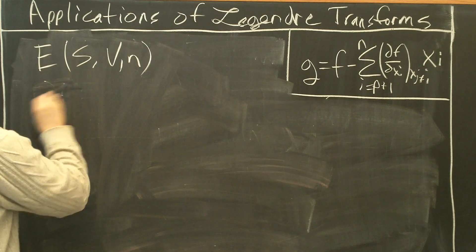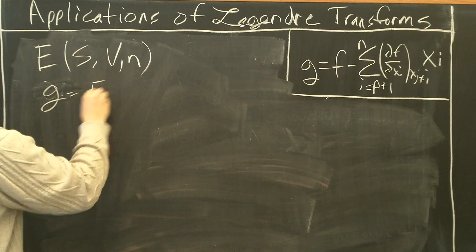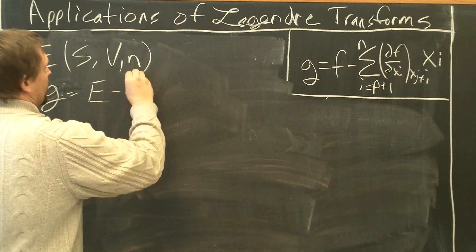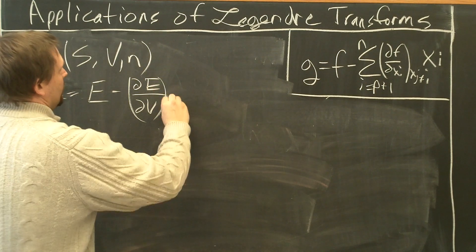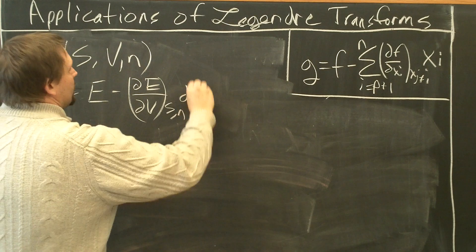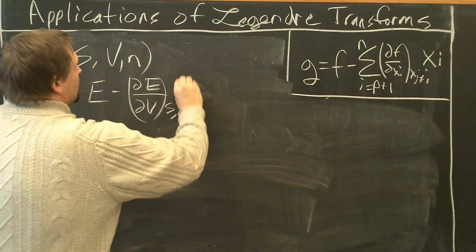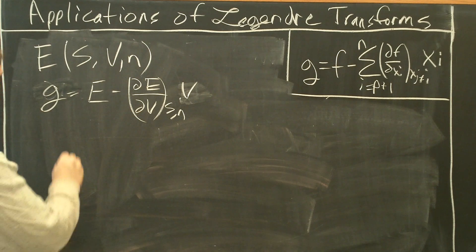Plan the new state function G equals E minus partial E with respect to V at constant S and N, times V, not dV. What is dE/dV at constant S and N?